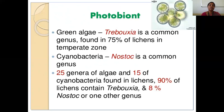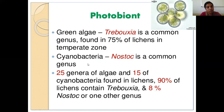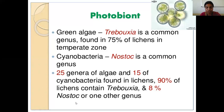Regarding the partnership of algae and fungi: the algal partner we call the photobiont. The majority of algae in lichen associations are green algae — chlorophycean members — especially Trebouxia, a unicellular green algal genus found in 75% of lichen associations, especially in the temperate zone. In addition, cyanobacteria are also reported, especially Nostoc, a filamentous unbranched blue-green alga. Among 25 genera of lichen, 15 genera are reported with blue-green algal members. 90% of lichens contain Trebouxia, while only 8% are associated with cyanobacteria such as Nostoc.